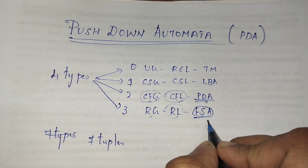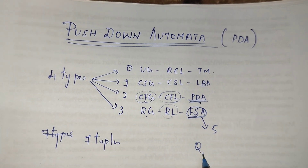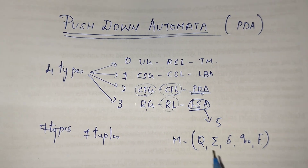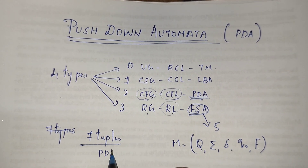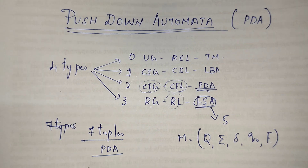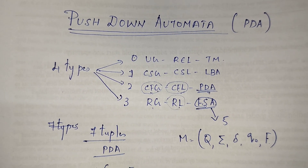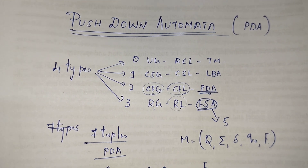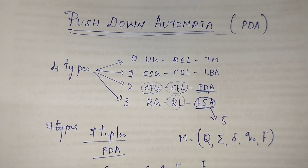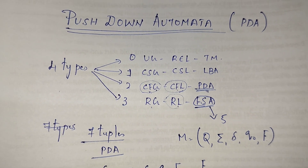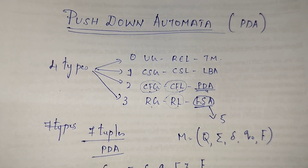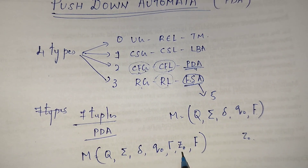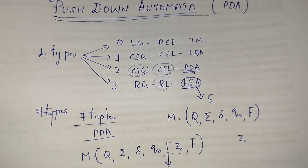Finite automata is represented by five tuples: Q, Σ, δ, q₀, and F. In case of pushdown automata it is represented by seven tuples — those same five plus two more: τ (tau), which is the stack alphabet, and Z₀, which is sometimes written as Z₀ or just Z, indicating the top of the stack.